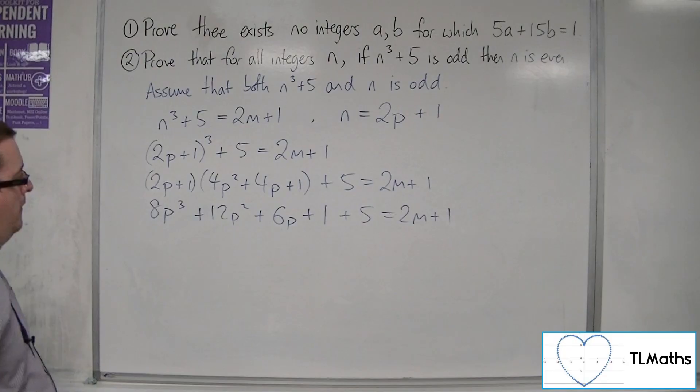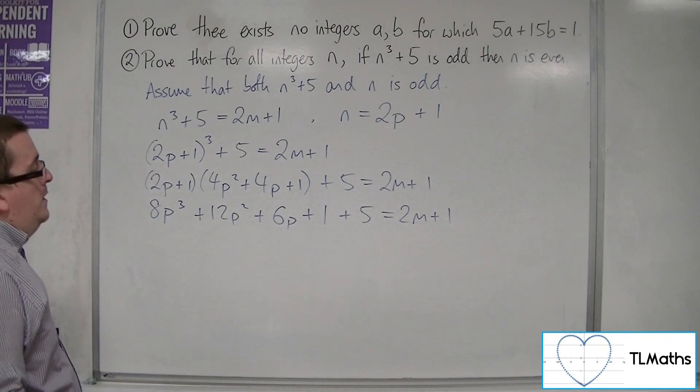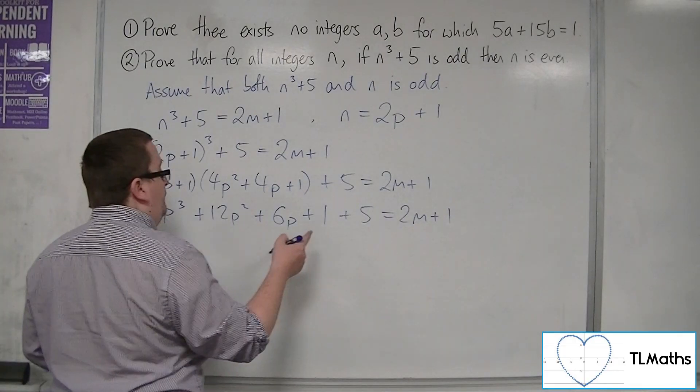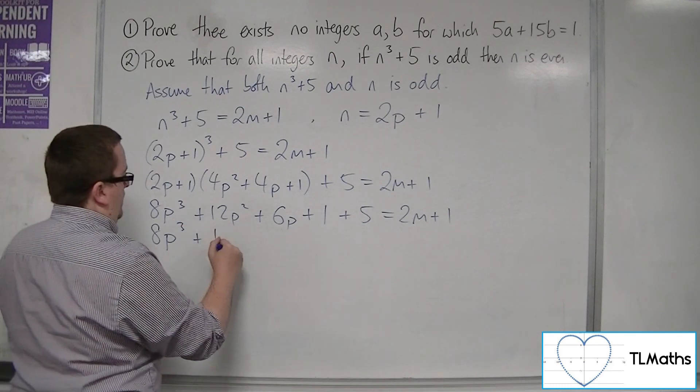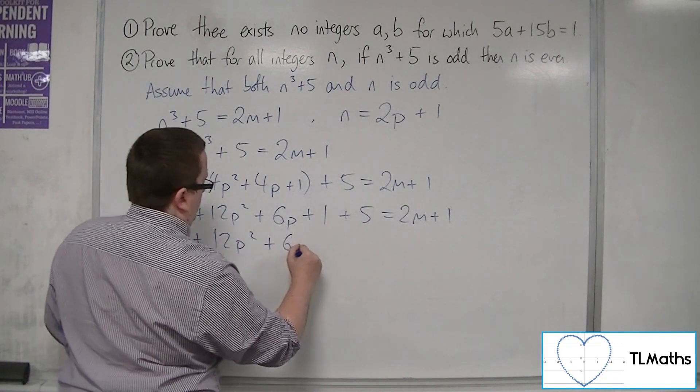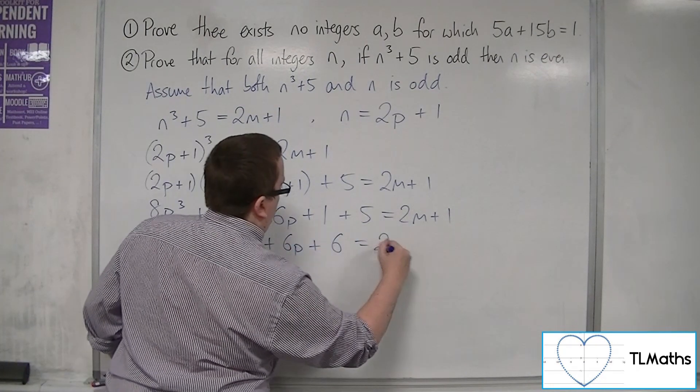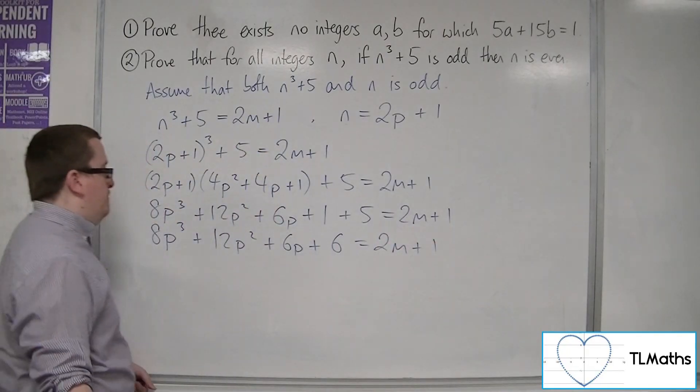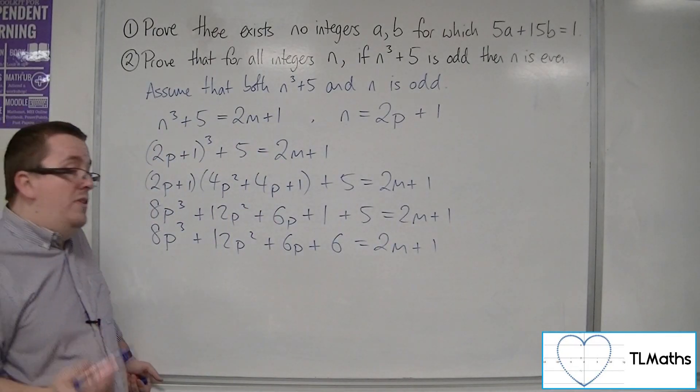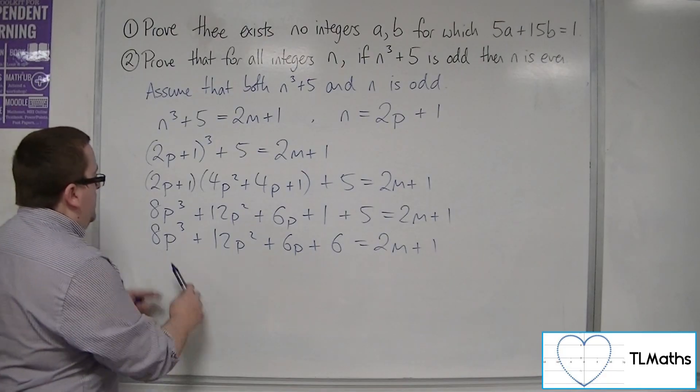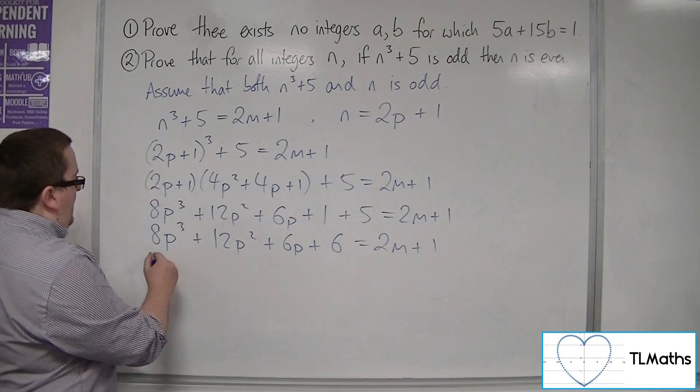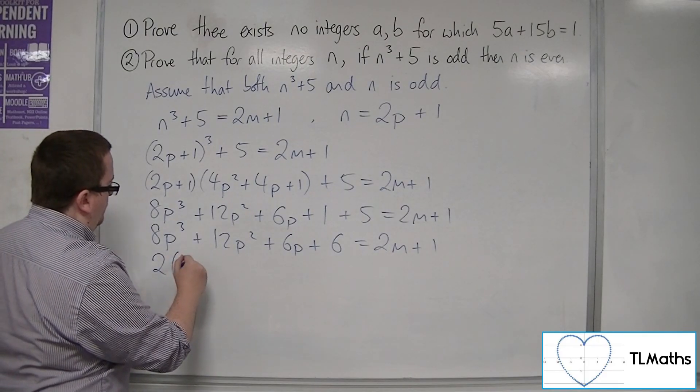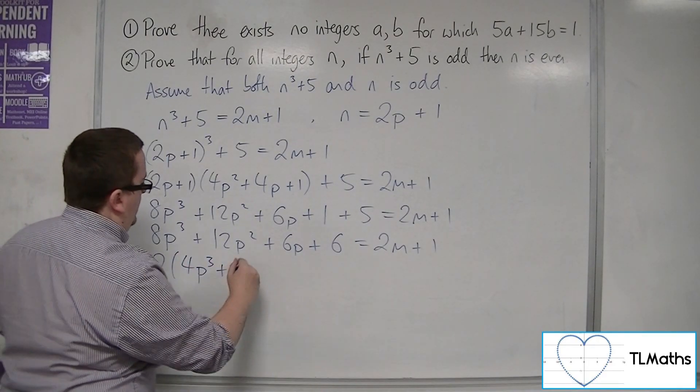So then what could I do? Well, I can add the 1 and the 5 together. And then what am I saying? Well, this left-hand side, if I factor out a 2, then I get this.